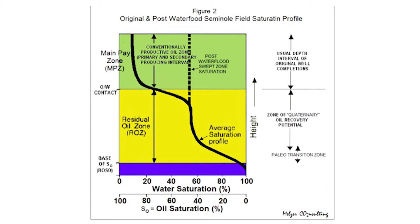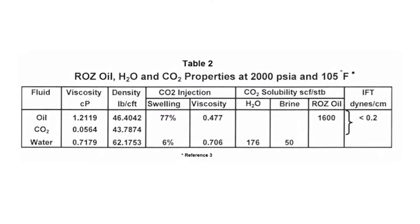You can see there's a zone of constant oil saturation of about 30 to 40 percent through a major part of the interval in the residual oil zone. It turns out that 30 to 40 percent is very representative of the oil left behind after our water floods, in addition to here, which is Mother Nature's water flood. And then at the base you can see what we call the paleo transition zone, where the oil saturation falls to zero over a finite interval.